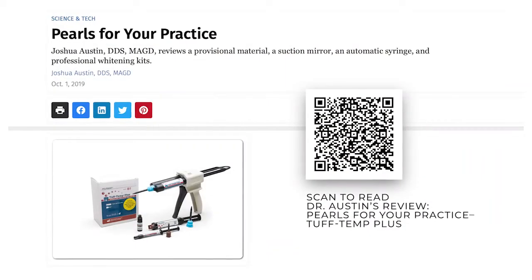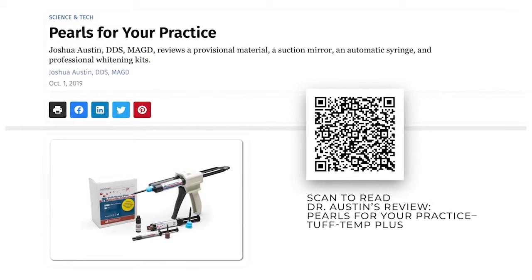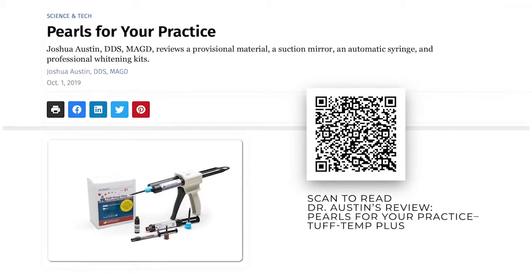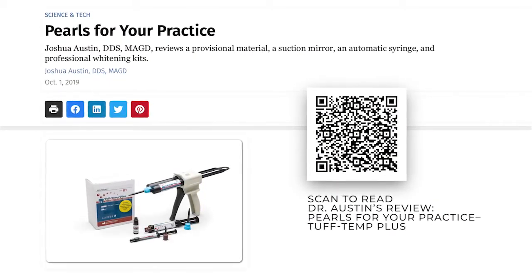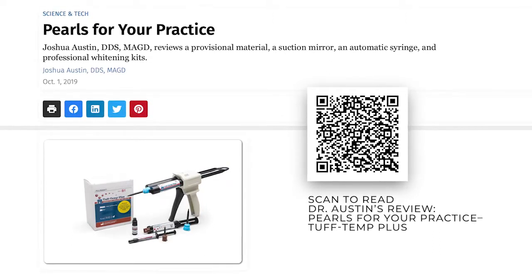So today we're going to make a three-unit FPD provisional, and we're going to walk through the process of that, how I do it, what burrs do I use to trim, where do I use discs, all that kind of stuff, and then walking through the repair process should we need to, and then glazing it if we want to take it to the next level. So let's go take a look.